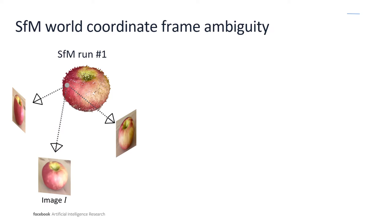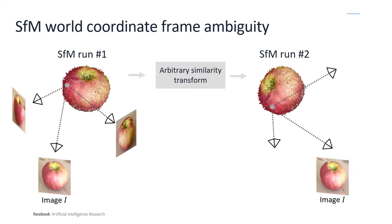However, structure from motion does not ensure that objects will have the same scale or will be aligned canonically. For instance, two different runs of structure from motion can result in two reconstructions of the same 3D shape related by an arbitrary similarity transformation.